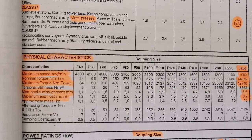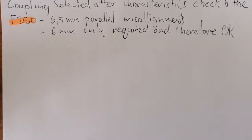The coupling selected after the characteristic check is the F250. The 6.6 millimeter parallel misalignment that it can handle is more than what is required, which is 6 millimeters, and therefore it's okay.